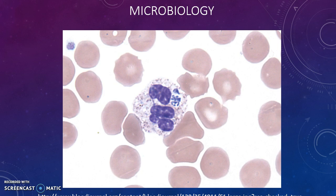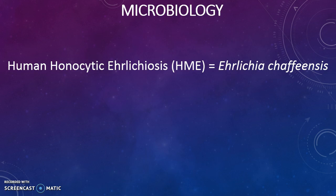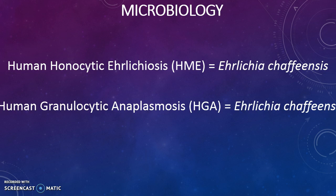Microbiology: the bacterial culprits in this case are gram-negative, obligate intracellular organisms. What this means is they will not get caught by humoral immunity. Human monocytic ehrlichiosis is caused by Ehrlichia chaffeensis, while human granulocytic anaplasmosis — the easier one to pronounce — is caused by Anaplasma phagocytophilum.